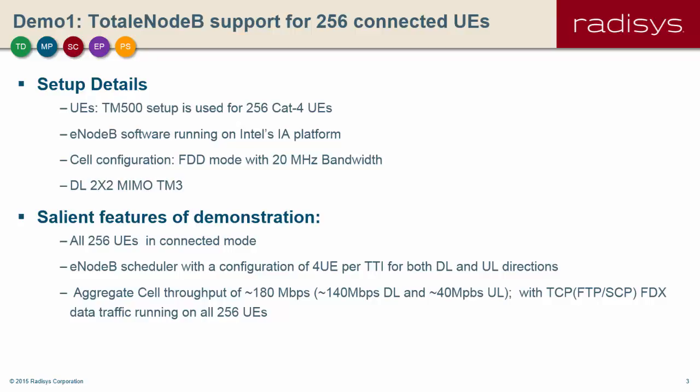With all 256 users active, we can see an aggregate throughput of around 180 Mbps, where it is around 140 Mbps in downlink and around 40 Mbps in uplink.